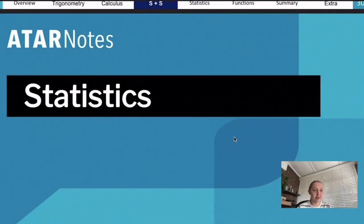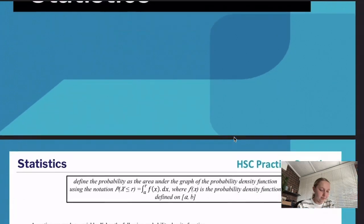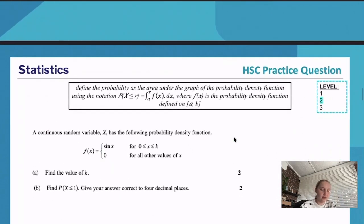Statistics is a pretty fun topic. If you like it, you like it; if you don't, you don't. But I do think statistics is pretty fun. This is question four for statistics, probably about a two in terms of difficulty. We're looking at the syllabus point: define the probability as the area under the graph of the pdf using the notation, where f of x is the probability density function defined on a to b.